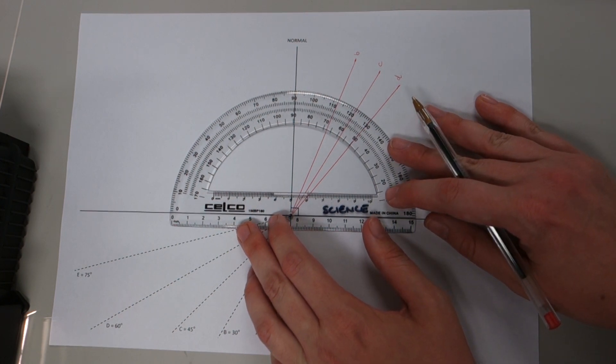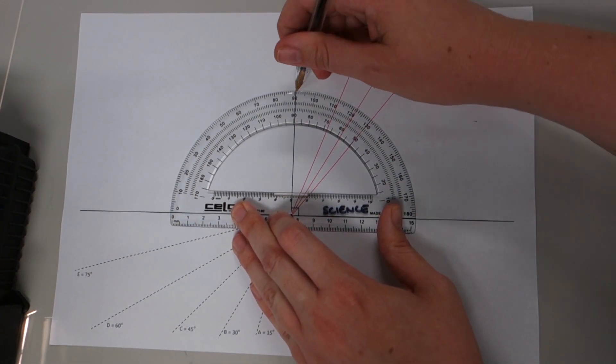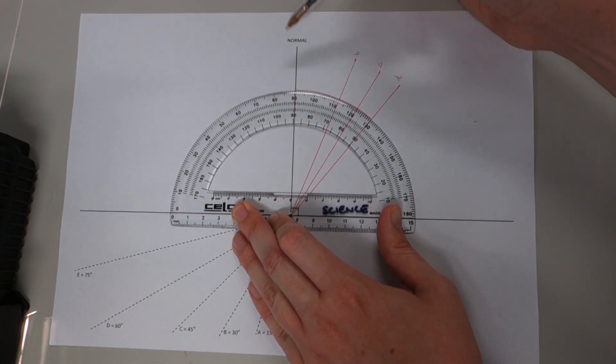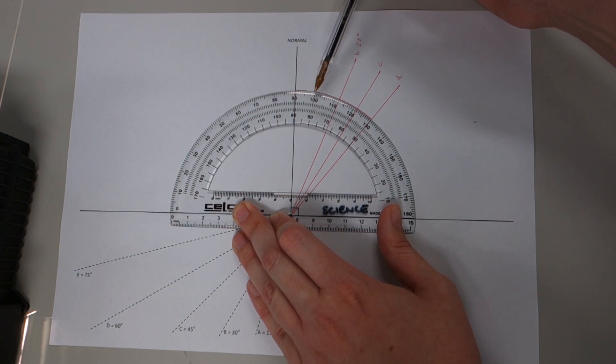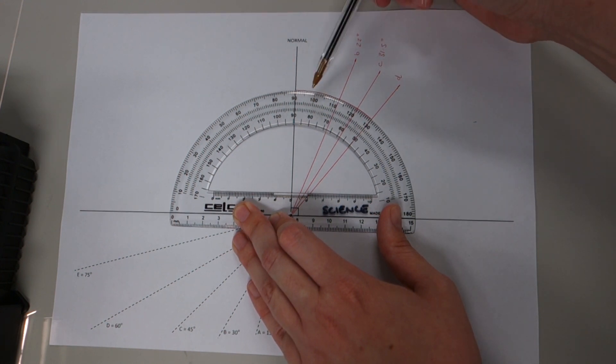So we'll take our protractor and we'll measure the angles of refraction for B, C and D. So you can see it's from the normal line to the line of refraction so that we can see that B is 10, 20, 22 degrees, that C is 10, 20, 30, 31.5 and D is 10, 20, 30, 40 degrees.